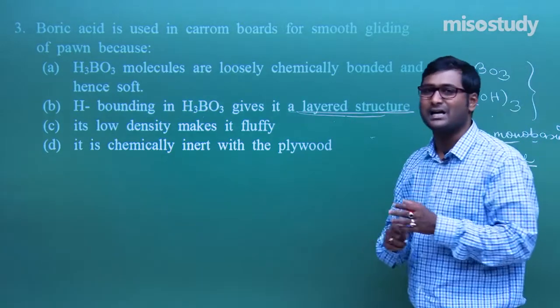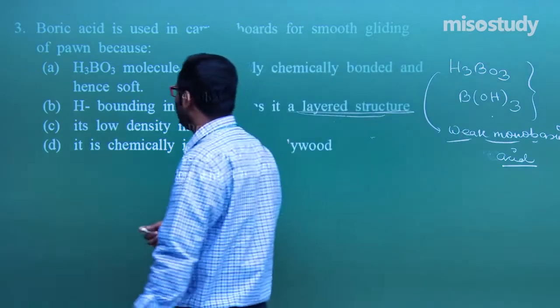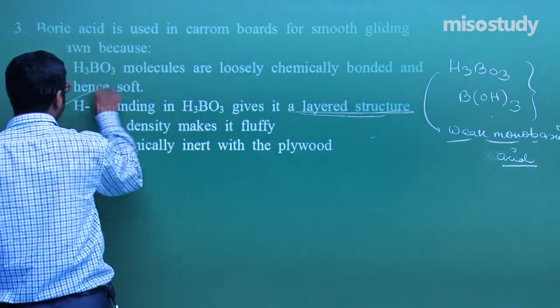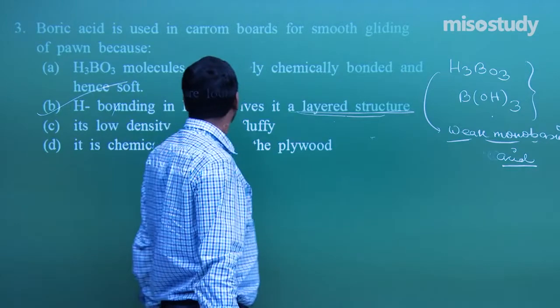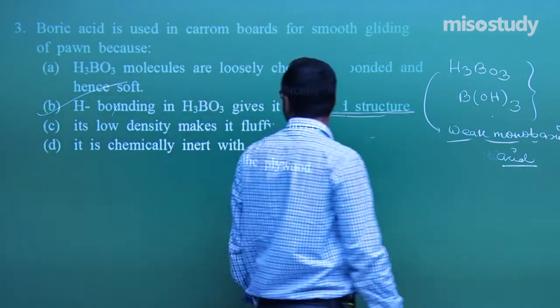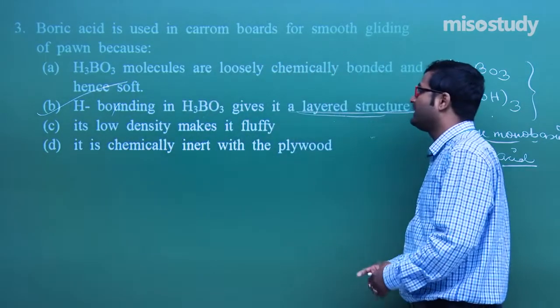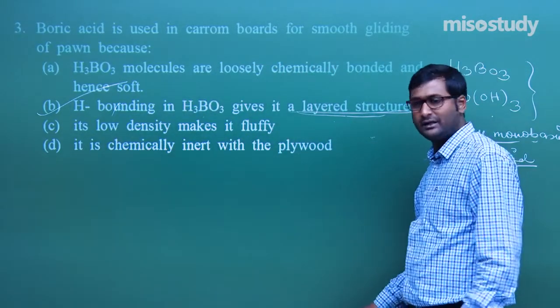So the answer for this question is option B: H-bonding in H₃BO₃ gives it a layered structure, which makes it smooth and useful in carom boards.